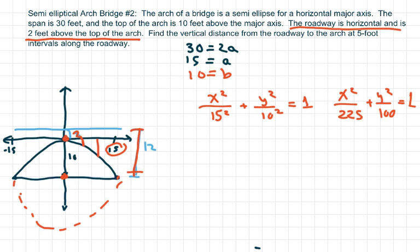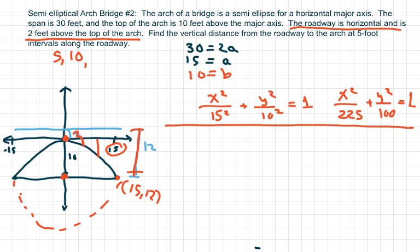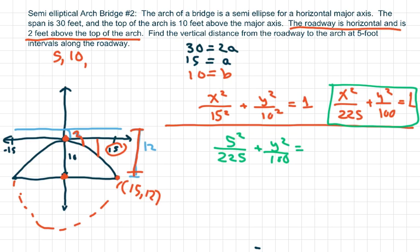The first thing we're going to do is plug in x = 5. We did a problem like this with parabolas. So we want the 5-foot, 10-foot, and 15-foot intervals. We already know what 15 feet is — that's easy. So 15 feet gives us the point (15, 12). Now let's do the 5-foot case using our equation.